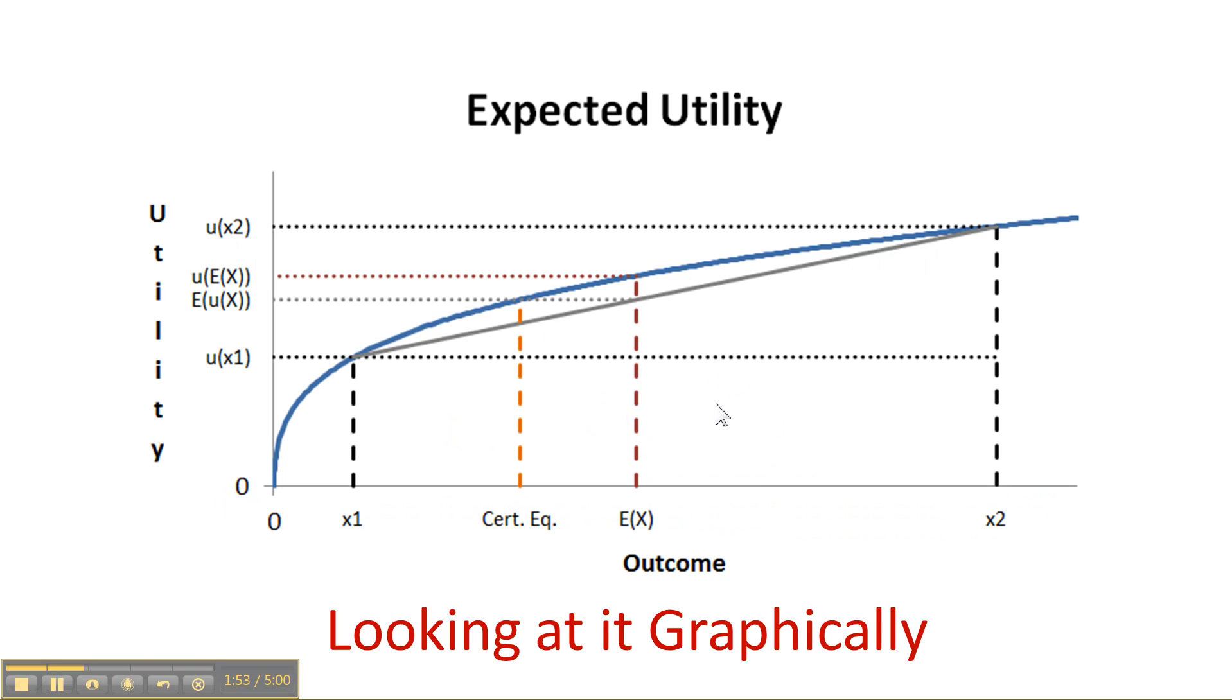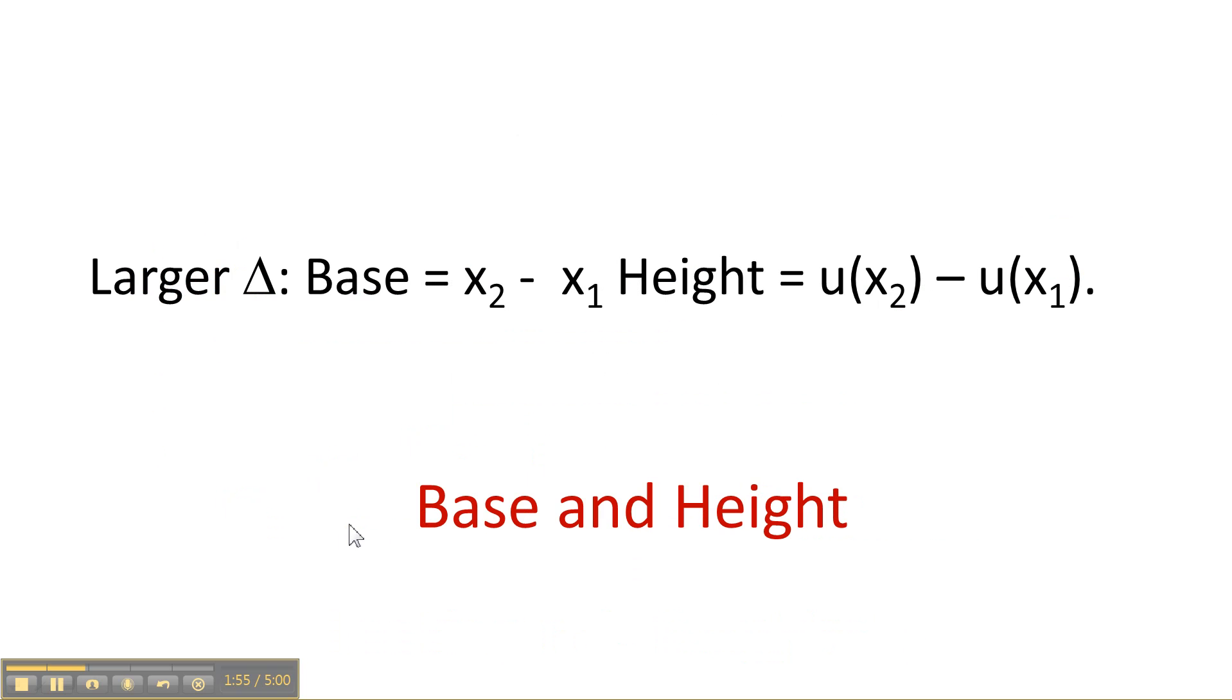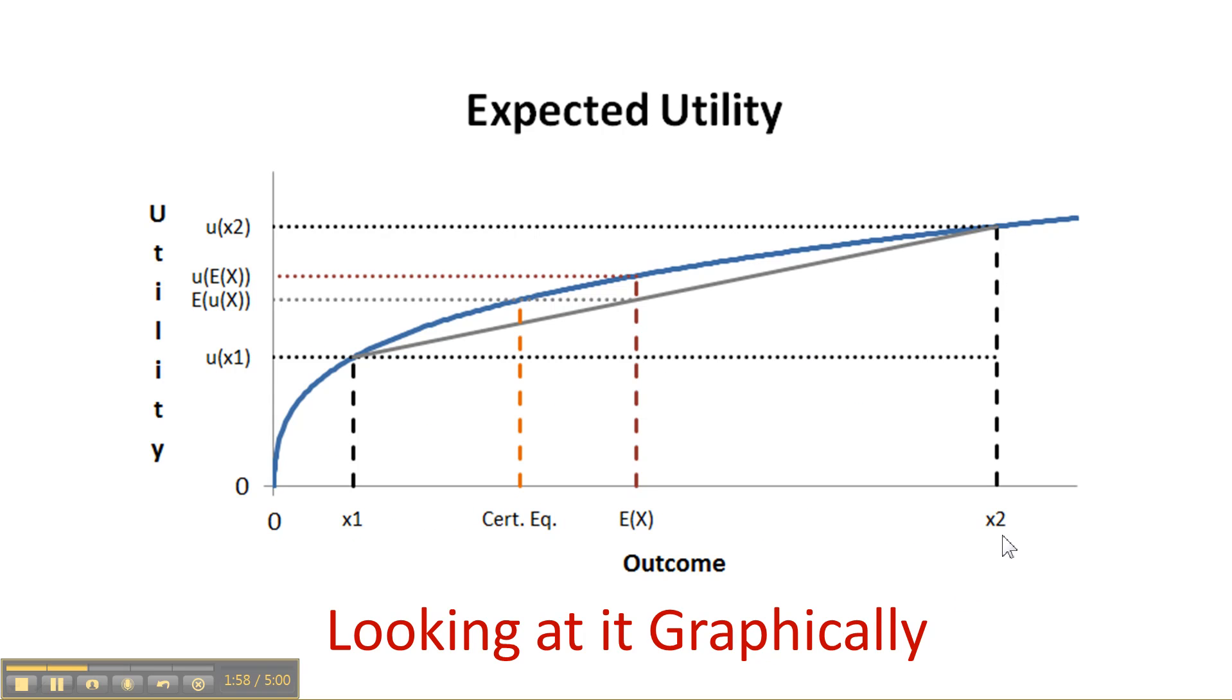Here's the graph of this. Here's x1, smaller value. Here's x2, the larger value. The expectation of x is somewhere in between. This is the utility of the smaller value. This is the utility of the higher value. The utility of expectation of x is here.